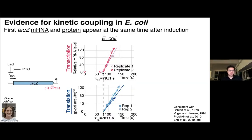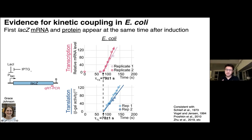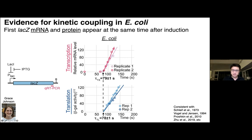Another graduate student, Grace Johnson, joined this project. We decided to use a classic assay to measure kinetic coupling between transcription and translation in E. coli and see if it's happening in Bacillus subtilis. The assay is based on a simple induction system where you can turn on transcription quickly using IPTG. IPTG binds to the lac repressor, causing it to fall off the promoter, but it still takes time for the polymerase to transcribe through the gene. After adding IPTG, there's a lag before you start to see signal, indicating when the first RNA polymerase reaches the end of the gene, and then transcript levels accumulate linearly.